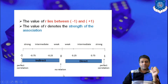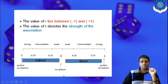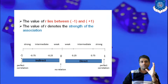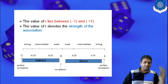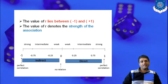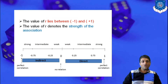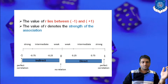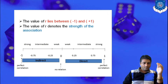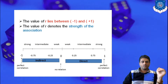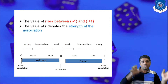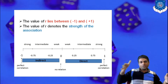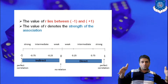If the value of r is positive 1, then we say there is a strong positive correlation between two random variables x and y. If the value of r is negative 1, then there is a strong negative correlation. In precise words, when the value of r is minus 1 or plus 1, we say it is a perfect correlation — whether positive or negative, it is a perfect correlation.